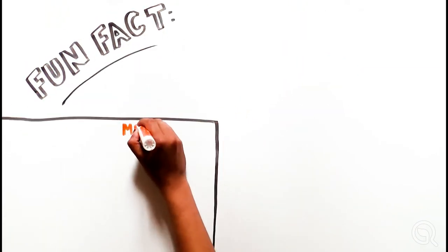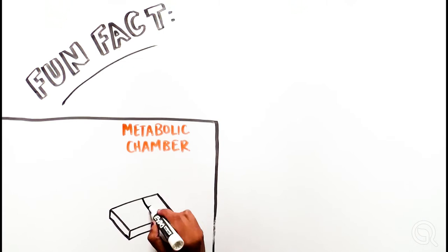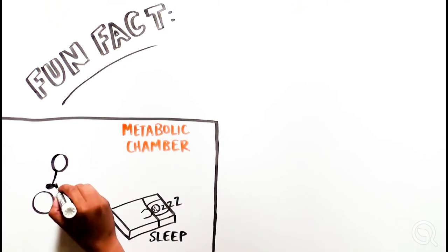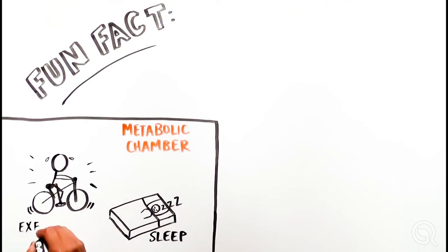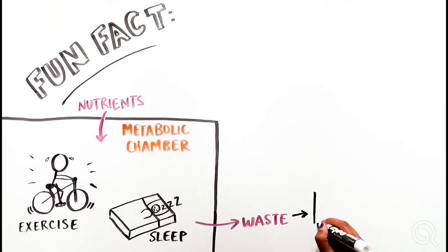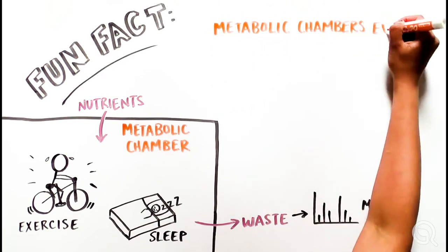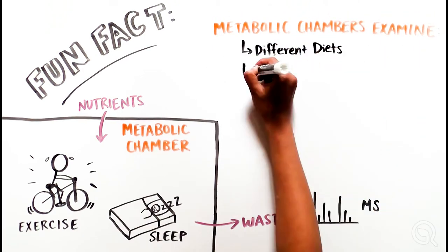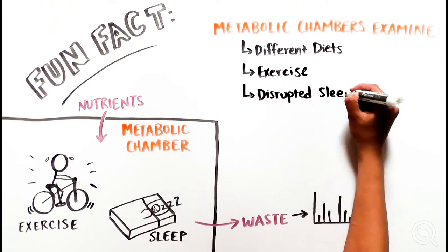Fun fact, there are laboratories with metabolic chambers in which volunteers live for short periods of time. Everything that they eat and even excrete can be measured, allowing us to examine the effect of different diets, exercise, or disrupted sleep on how fuels are broken down.